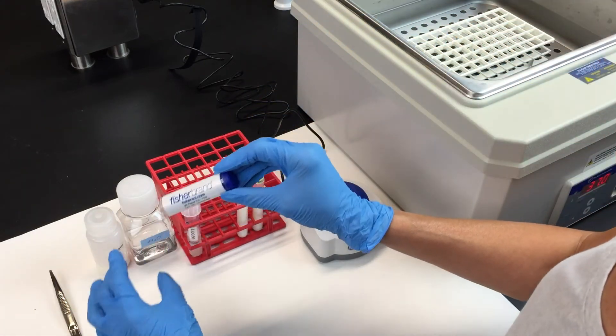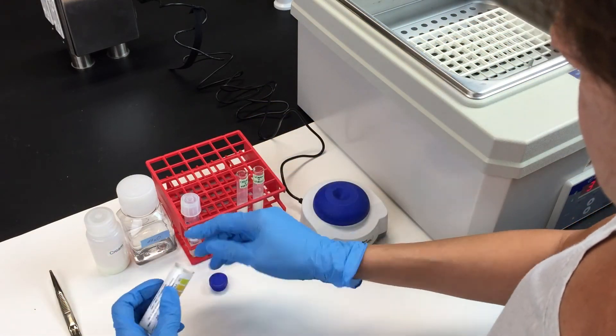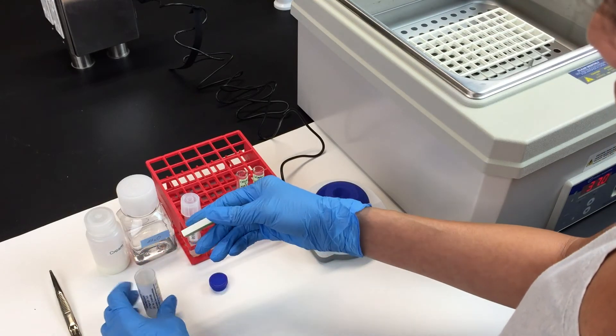Now use the pH paper provided to check the pH of both tubes and note it down.